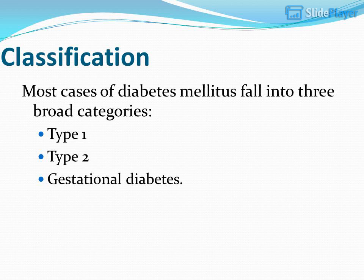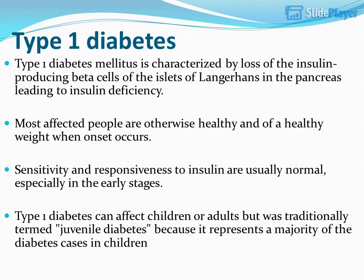Classification: Most cases of diabetes mellitus fall into three broad categories — Type 1, Type 2, and Gestational Diabetes. Type 1 diabetes mellitus is characterized by loss of the insulin-producing beta cells of the islets of Langerhans in the pancreas, leading to insulin deficiency.